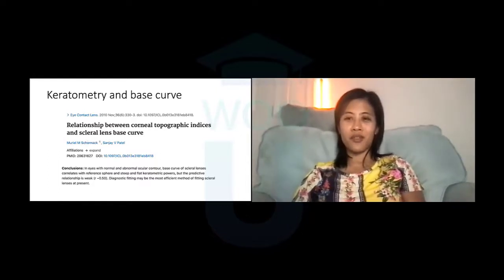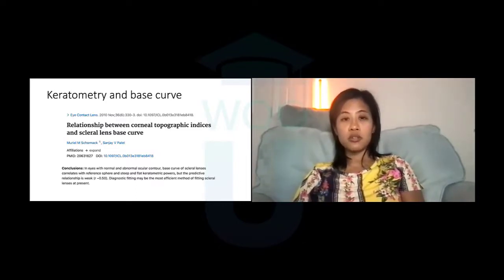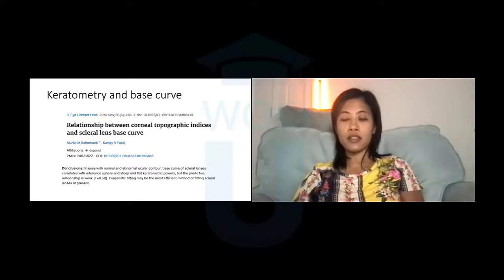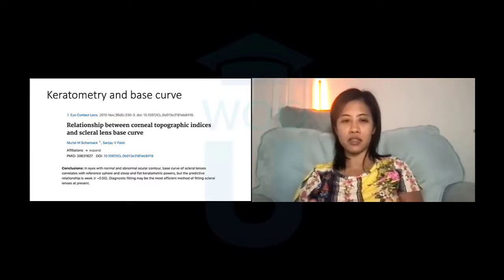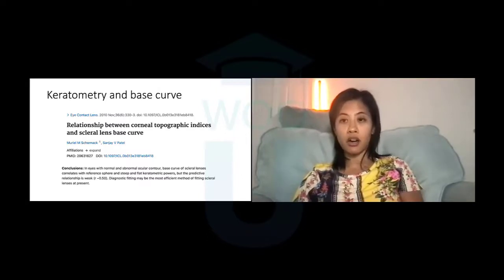This is quite different from corneal GP lens fitting. With corneal lenses on regular corneas, it's very predictable — you fit based on keratometry values and get an empirical lens. But you actually can't look at corneal topography to determine what scleral lens you need, because with a scleral lens, we're not fitting the cornea at all. We're completely bypassing the cornea and fitting the scleroconjunctival shape, vaulting the whole ocular sagittal depth. I take topography more for monitoring purposes.